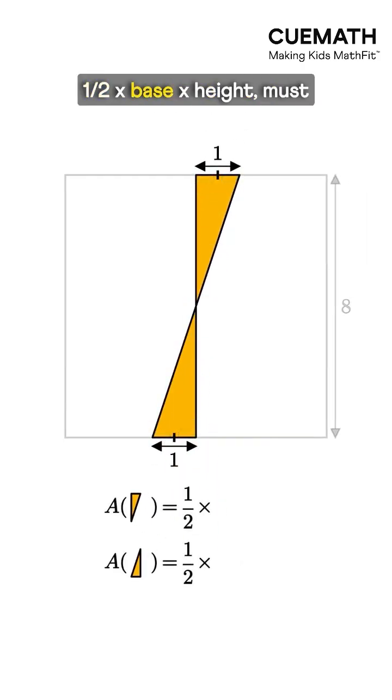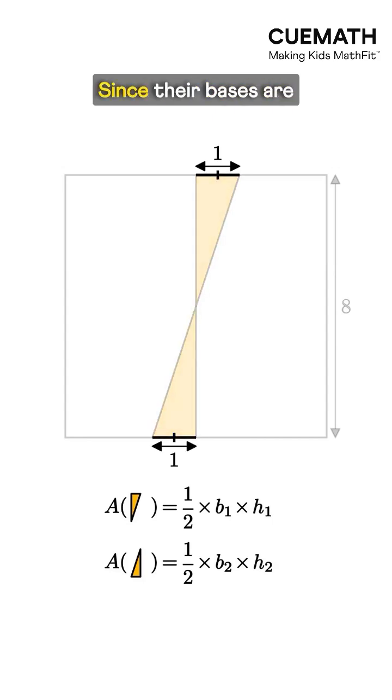So their areas, half base times height, must also be equal. Since their bases are equal, their heights must be equal too.